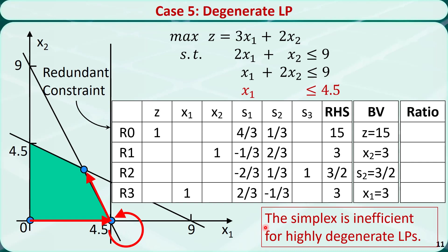If a linear programming problem has many degenerate basic feasible solutions, the simplex algorithm can be very inefficient. In some problems, degeneracy can cause the solution to cycle indefinitely, and the simplex algorithm may fail to reach the final optimal solution. Fortunately, some degenerate linear programming problems have a special structure that enables us to solve them by methods other than the simplex. We have covered special cases of linear programming problem solutions and how to identify them in the simplex tableau.